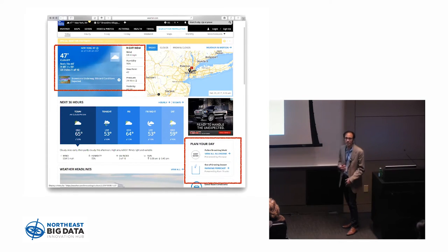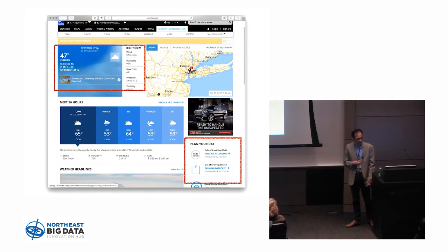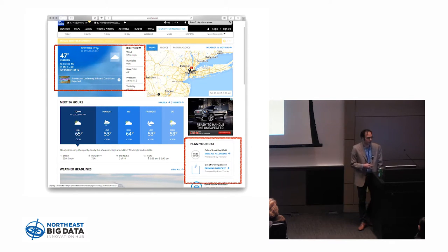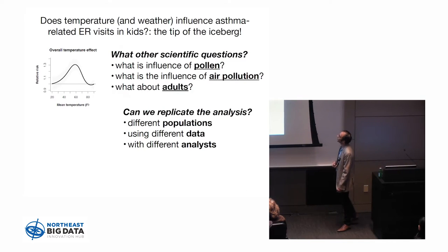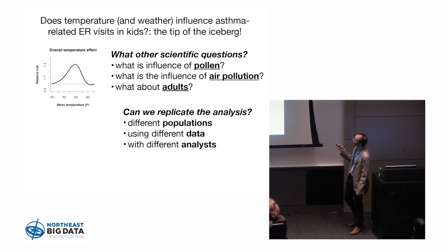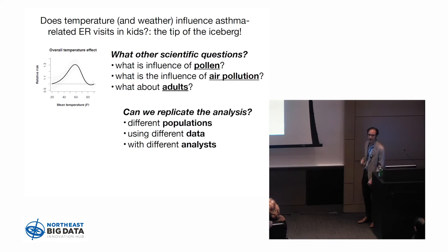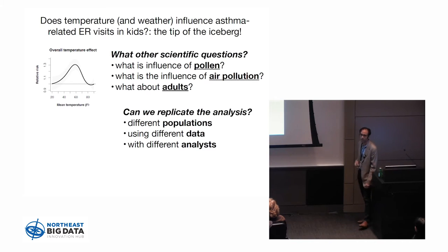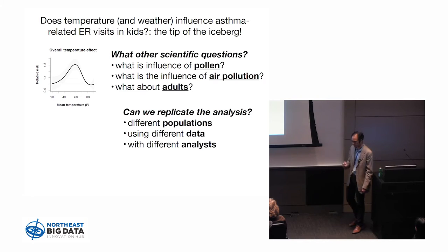This pattern was persistent in some locations and not others — demonstrating the real power of mashing up patient information with environmental information. Industrial entities like weather.com are very interested in looking at health using the information they're already capturing. We could start asking questions about asthma in different demographic analyses, and also addressing really important issues in research reproducibility — looking at different populations, using different datasets, and executing analyses with different analysts.